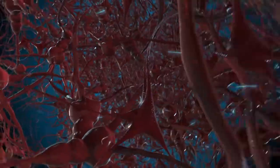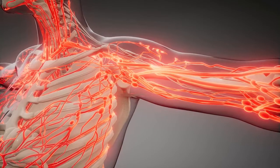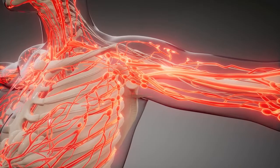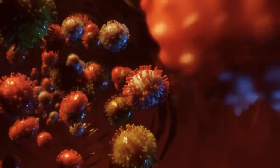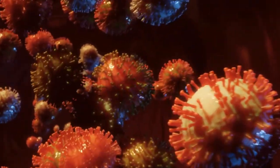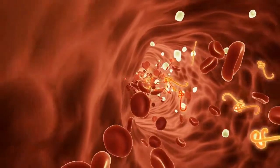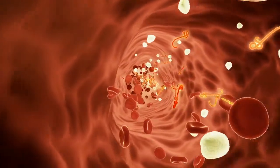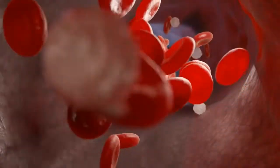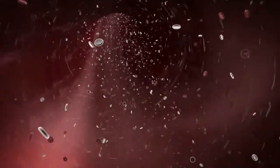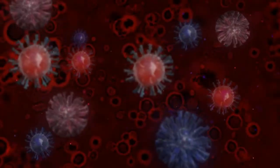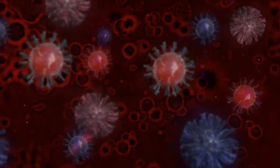It has a network of cells, tissues, and organs that work together to protect us from infections and diseases. The white blood cells, for example, are the soldiers of the immune system. They identify and attack harmful invaders, keeping us healthy.